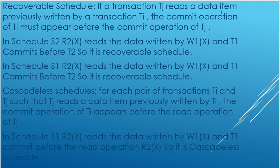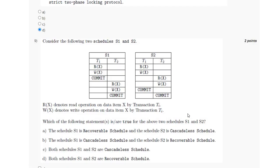For cascadeless schedules, for each pair of transactions Ti and Tj, if Tj reads a data item previously written by Ti, the commit operation of Ti should appear before the read operation of Tj. In schedule S1, R2(X) reads data written by W1(X) and T1 commits before the read operation R2(X), so it is a cascadeless schedule. The answer is option B and D.